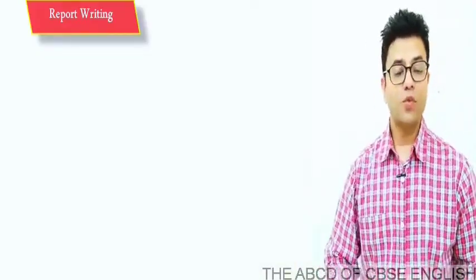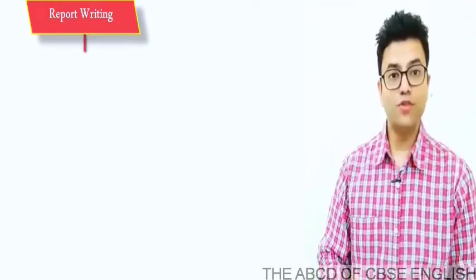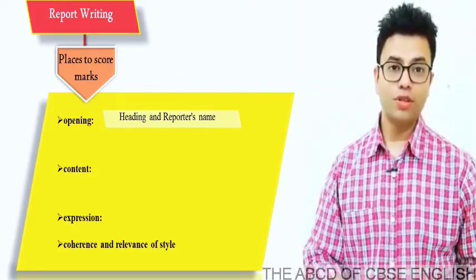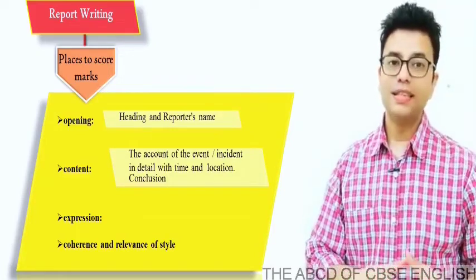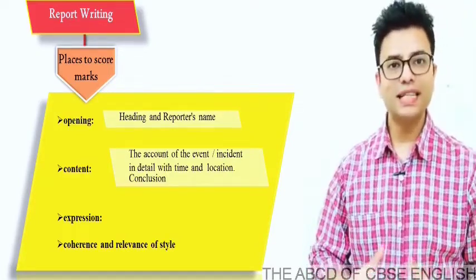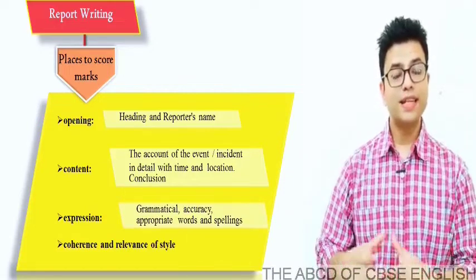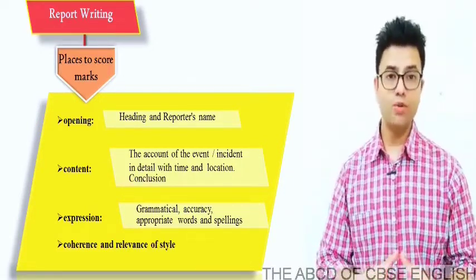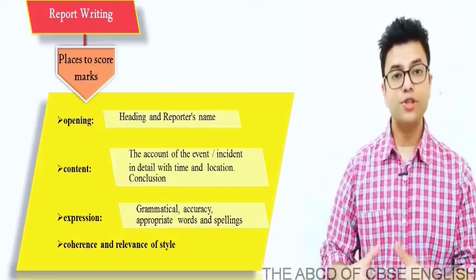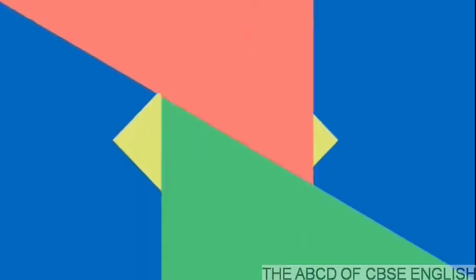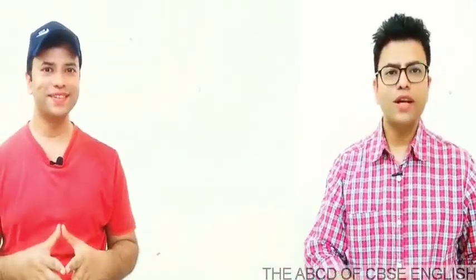So what does the teacher want to see in the report you write in the exam? There are several areas where you can draw the teacher's attention and score marks. Give a proper heading to your report and write the name of the reporter. In the content area, give it a proper opening, provide details of the event or incident in a logical sequence, then give it a proper conclusion. The teacher will also look at appropriate use of words, grammatical accuracy, and spellings. Finally, the teacher would look at coherence and relevance of style — coherence being the logical flow of your report writing and bringing it to a proper conclusion.